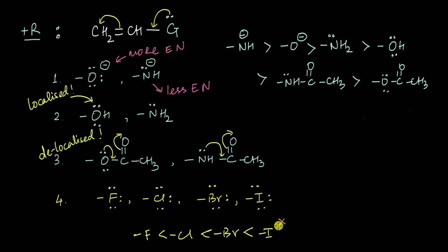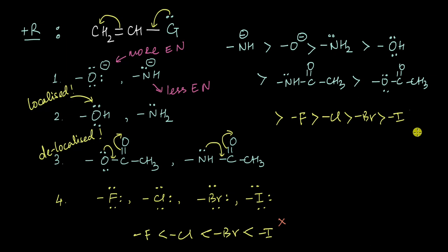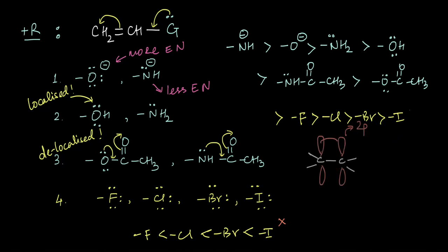The correct order turns out to be exactly the opposite: fluorine is actually a stronger plus-R group compared to chlorine, bromine, and iodine. To understand the reason behind this anomaly, we need to look deeper into the carbon-carbon pi system.